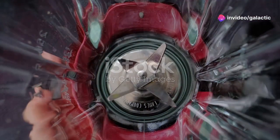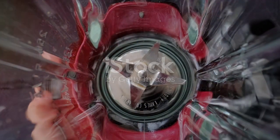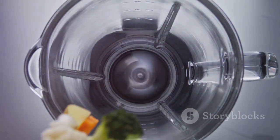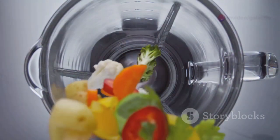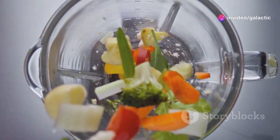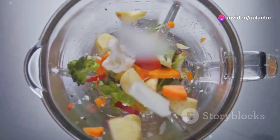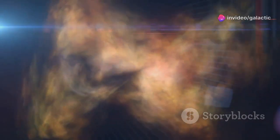To put this into perspective, consider a typical kitchen blender. We often think of these appliances as fast, but they pale in comparison to the speed of a pulsar. A powerful blender might spin its blades at around 20,000 rotations per minute. That's impressive for a household appliance, but it's nothing compared to the pulsar. PSR J0952-0607 spins over 20 million times faster. This comparison helps us grasp the extraordinary nature of these cosmic objects.